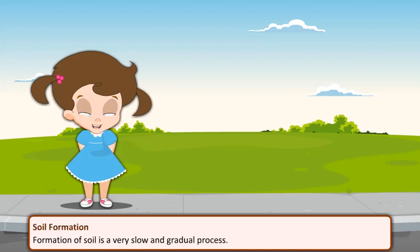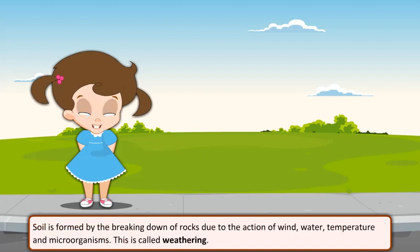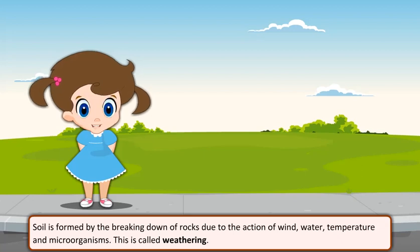Soil formation. Formation of soil is a very slow and gradual process. Soil is formed by the breaking down of rocks due to the action of wind, water, temperature, and microorganisms. This is called weathering.